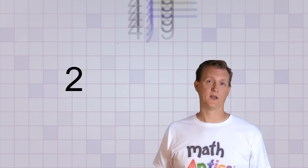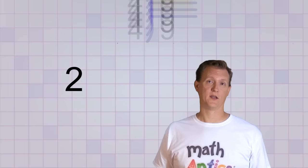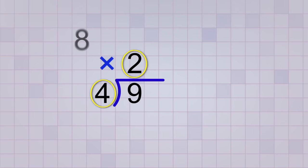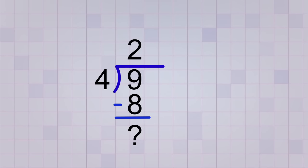If we say that two 4s will make 9, or almost 9, our problem looks like this. 2 goes in the answer spot, and then we do our multiplication procedure. We multiply that 2 by the 4, and we get 8. Then we write the 8 below the 9 so we can subtract it and find our remainder. 9 minus 8 equals 1. So that means our remainder is 1.